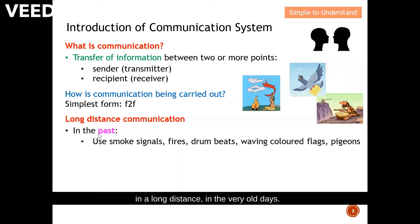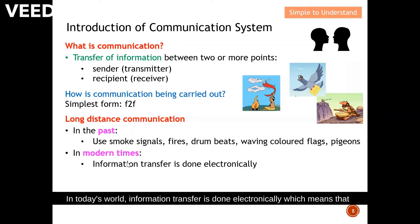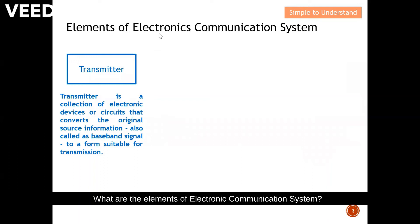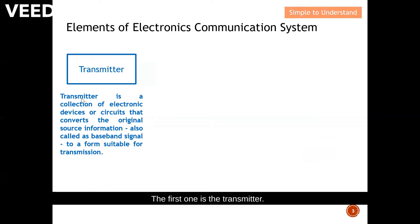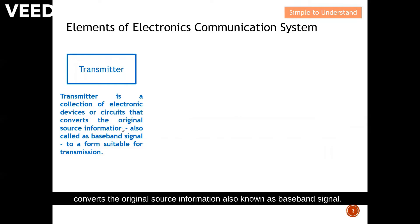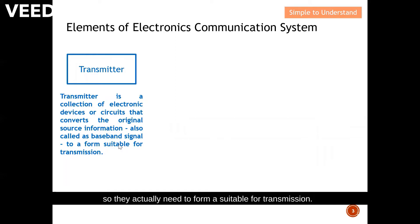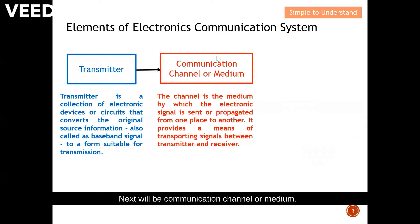In today's world, information transfer is done electrically, which means we need to establish an electronic communication system. There are actually three elements in an electronic communication system. The first one is the transmitter — a collection of electronic devices or circuits that converts the original source information, also known as the baseband signal, intelligence signal, or modulating signal, into a form suitable for transmission.